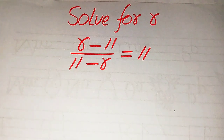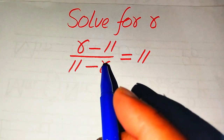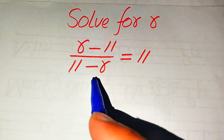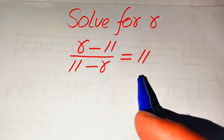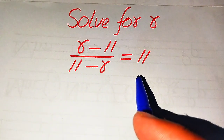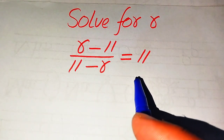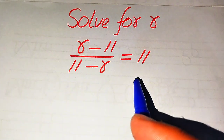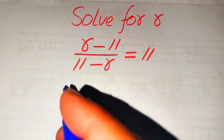Hello everyone. How to solve this problem for the values of r, if we have r minus 11 divided by 11 minus r equals 11. We solve this problem for all the values of r. First we need to find all the roots of this equation, and at the last we will verify which of the roots are solutions and which are extraneous roots.